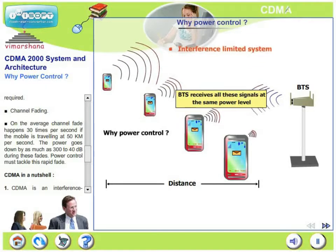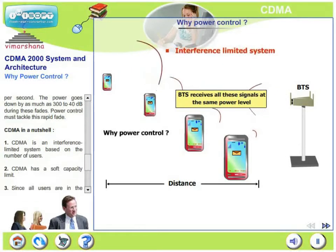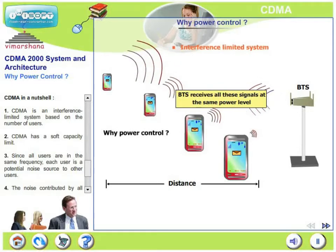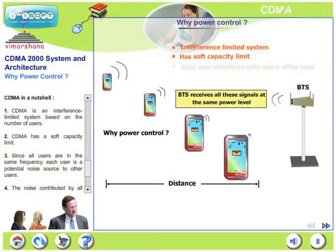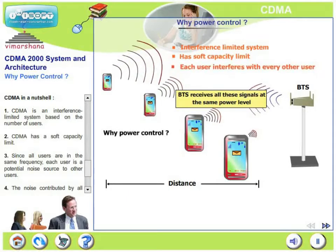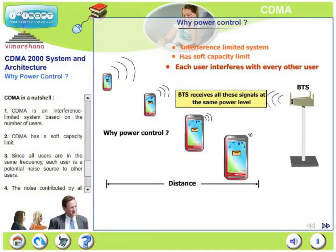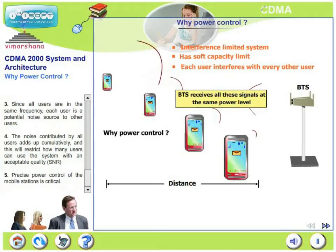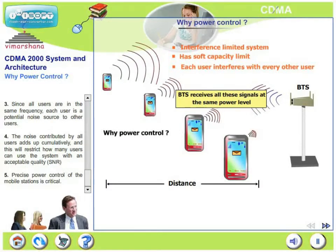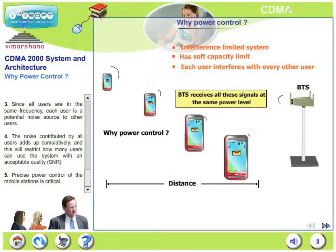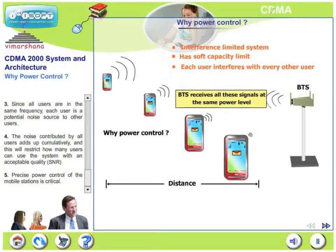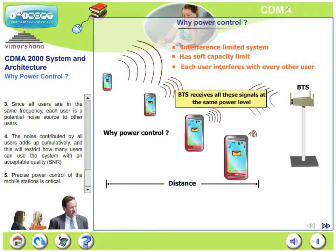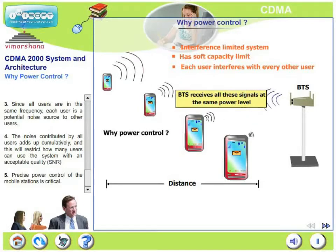Let us recall CDMA in a nutshell. CDMA is an interference-limited system based on number of users, and has an upper capacity limit called soft capacity. Since all users use the same frequency, each user is a potential noise source to the others. The noise contributed by all users adds up cumulatively, restricting how many users can use the system with acceptable quality or acceptable signal-to-noise ratio. Therefore, precise power control is very critical in CDMA communications.